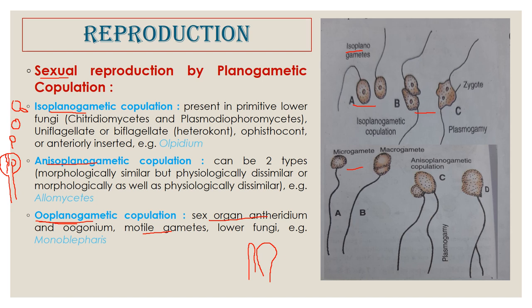Isoplanogametes are produced by Olpidium species, anisoplanogametes by Allomyces species, and ooplanogate copulation occurs in Monoblepharella.